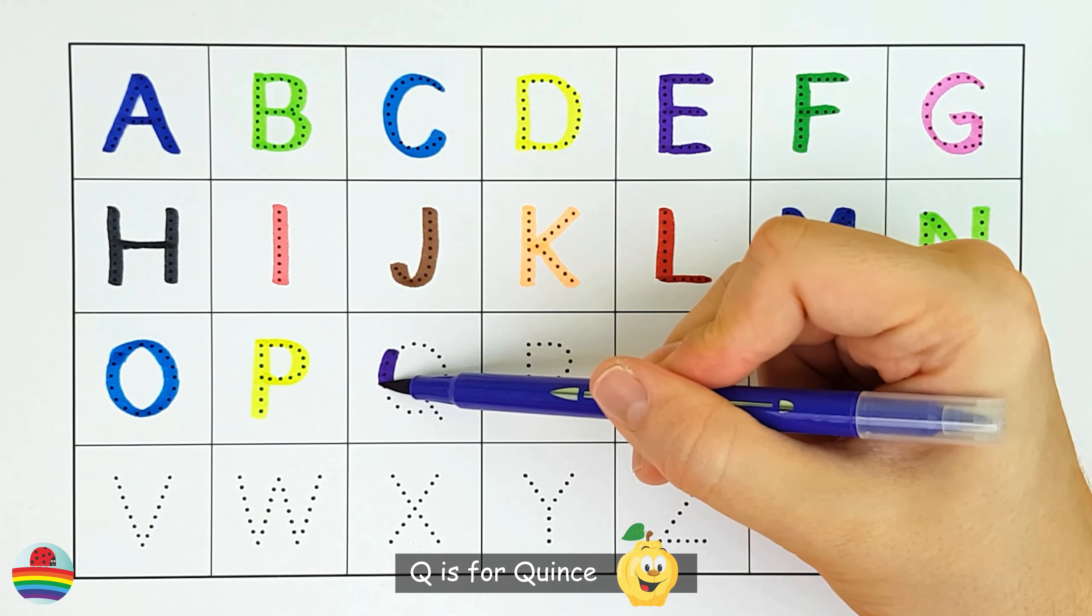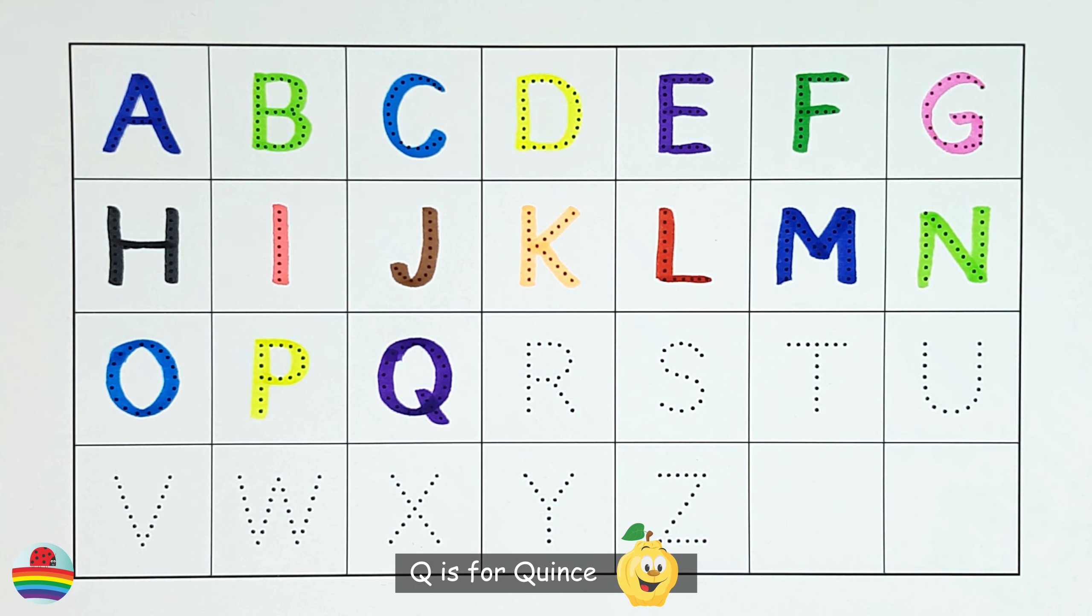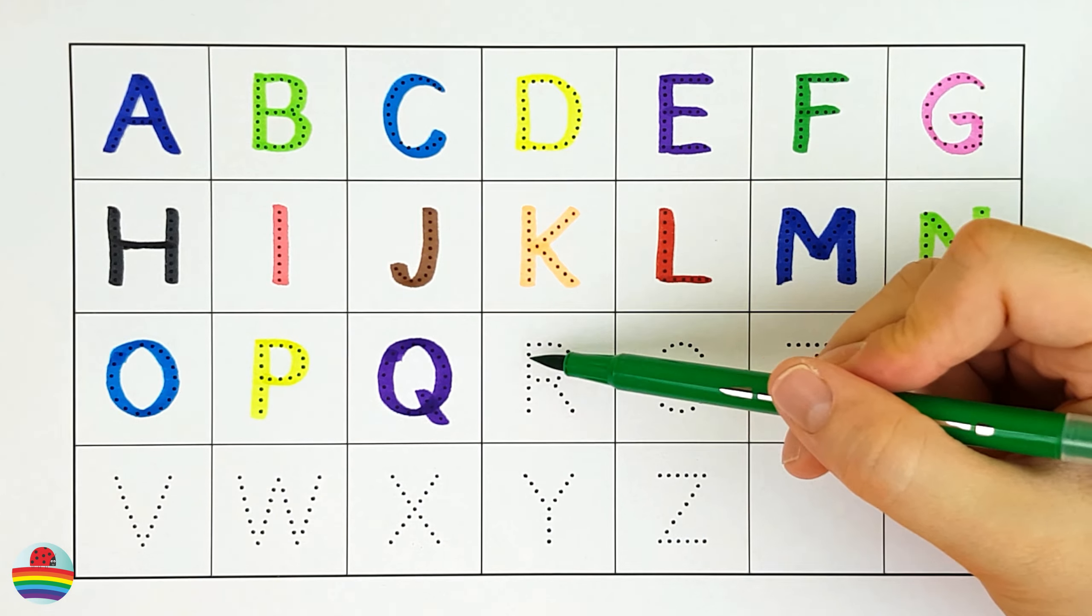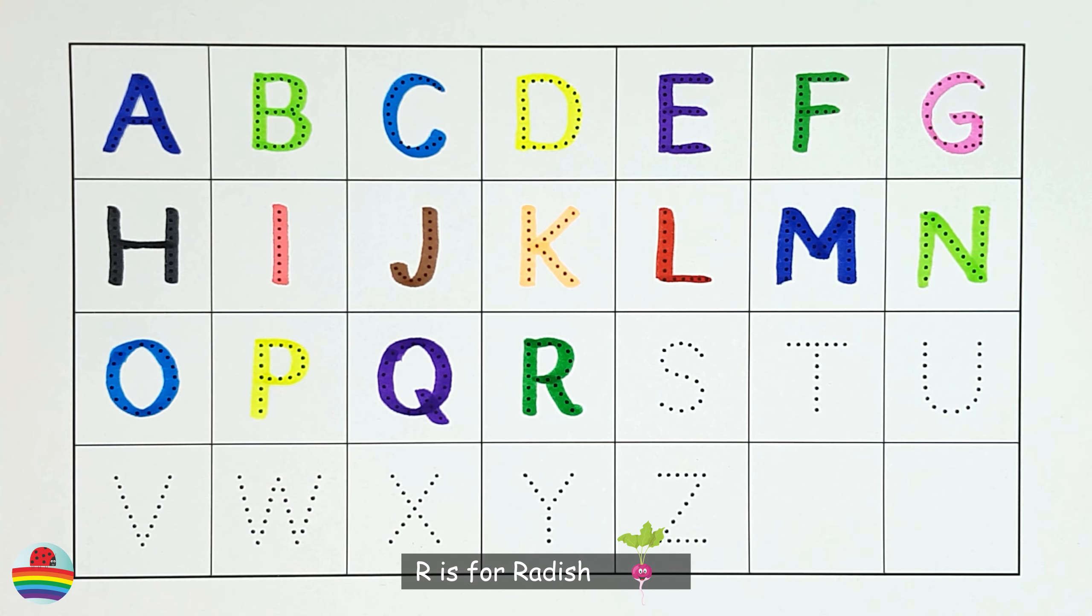Q. Q is for quince. Q. R. R is for radish. R.